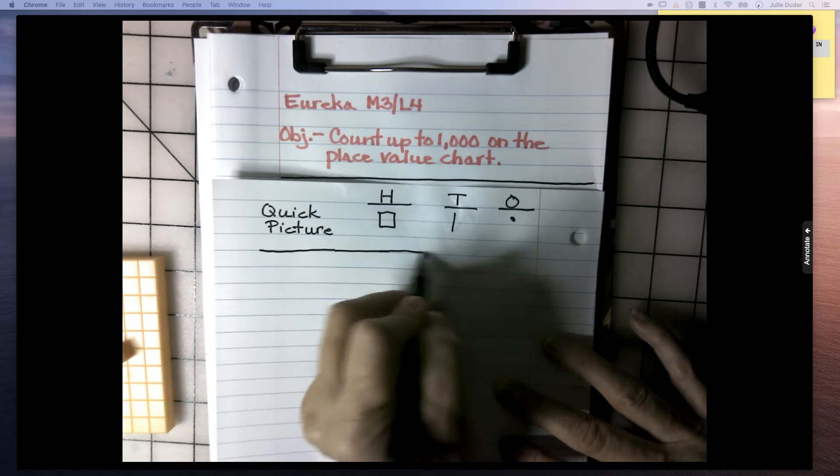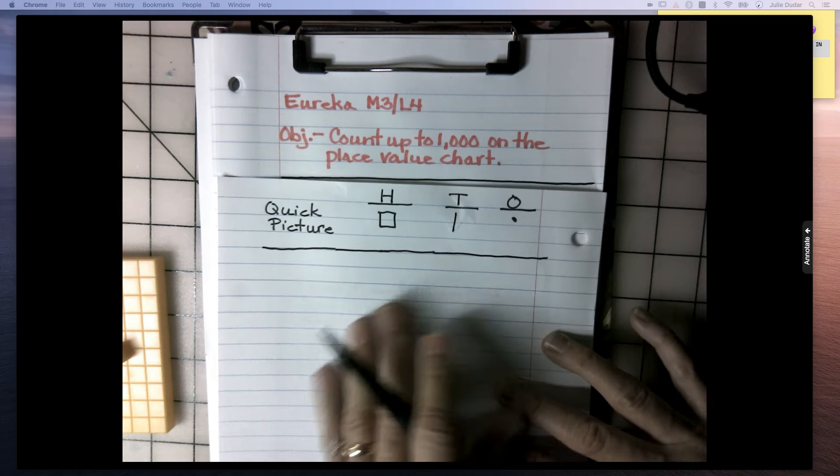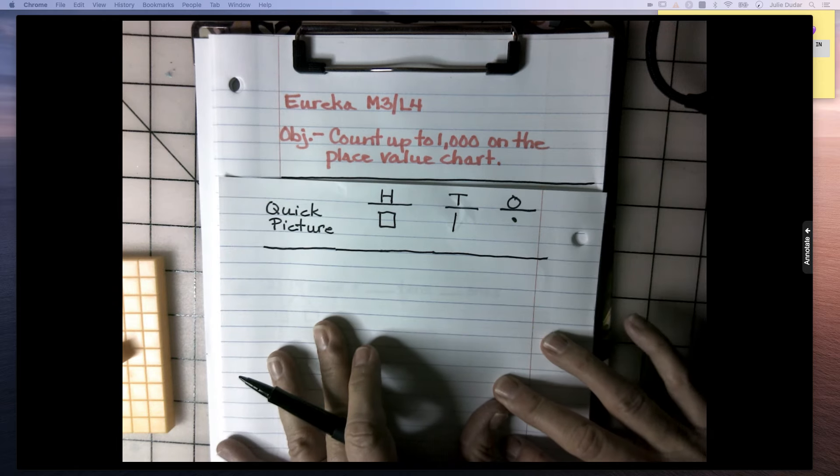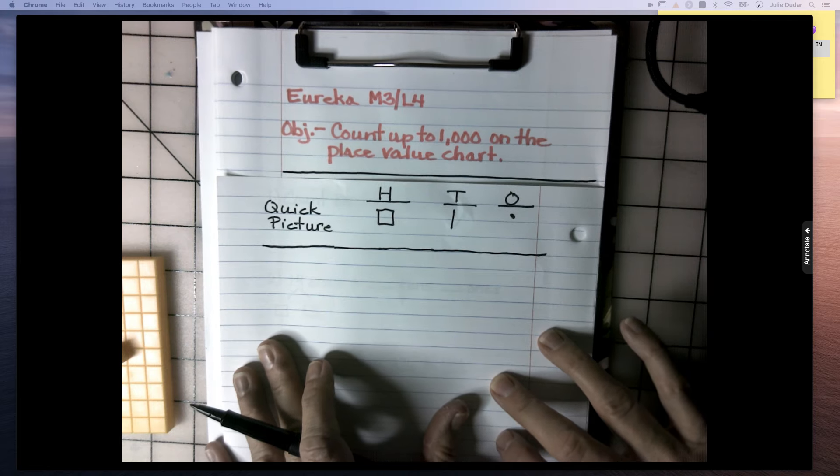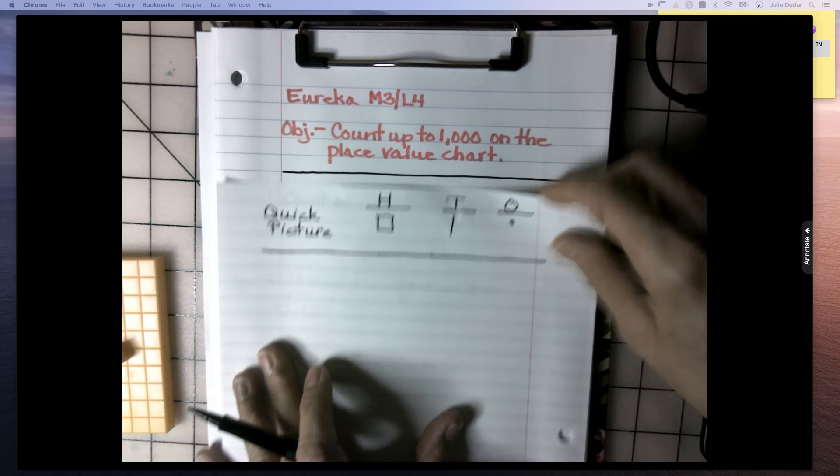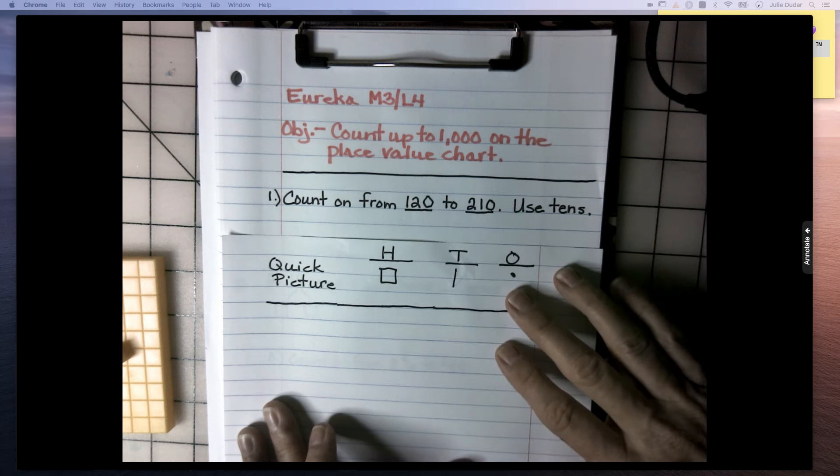And then we're using that information to count on. So we're going to use this to count on from a number up to a number that's a little bit less than 1,000. And here we go. We're going to count. This one starts small.